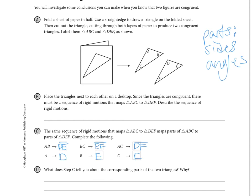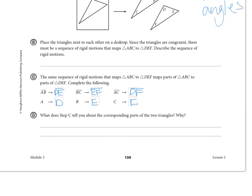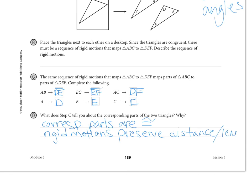So what does step C tell you about the corresponding parts of the two triangles? Well, we know that if it's a sequence of rigid motions that maps that, then all of the corresponding parts are congruent. And why that is, is remember that rigid motions or rigid transformations are going to preserve. Remember when we were looking back at the distance formula, preserves length, and angle measure, or shape.